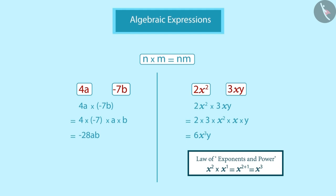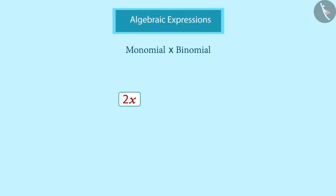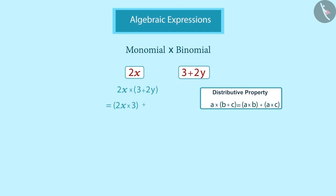Let us now go one step further and see how a monomial and a binomial are multiplied. We need to revisit the distributive property before we start. The distributive property tells us that the multiplication of A and B plus C is equal to the sum of the multiplication of A and B, and the multiplication of A and C. Using this property, multiplying 2x by the binomial gives us the sum of the multiplication of 2x and 3, and the multiplication of 2x and 2y. These are now monomial-by-monomial multiplications, giving us our final product.